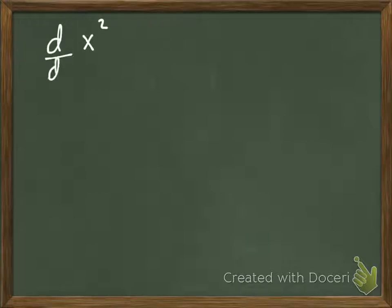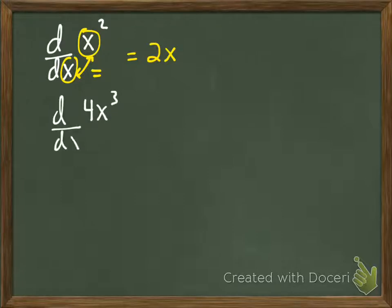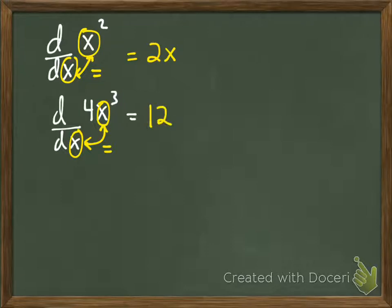Now, the derivative of some function of x with respect to x — here is the new part. These two letters are equal. When they are equal, there's no need to use the chain rule. You get 2x. Let's try another one: the derivative of 4x³ with respect to x. These are equal — they're the same letter. You just use the power rule: 3 times 4 is 12, x to the 3 minus 1 is x squared.